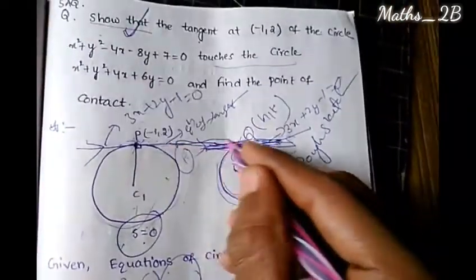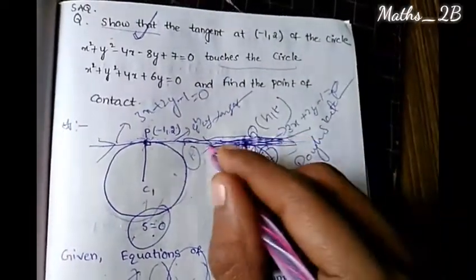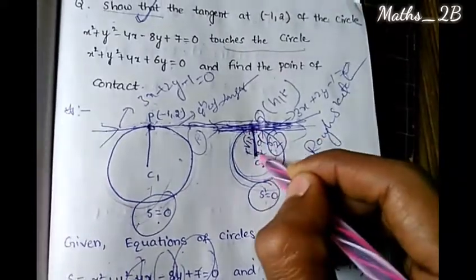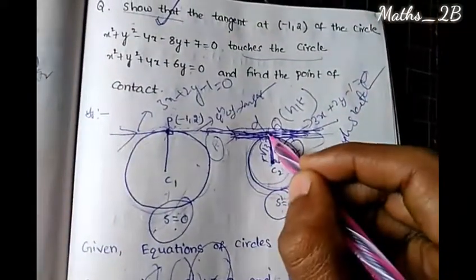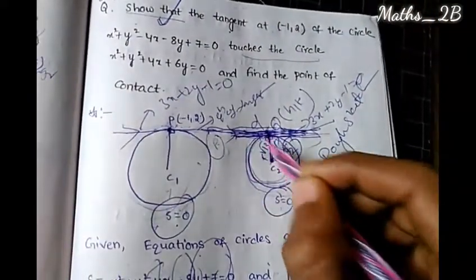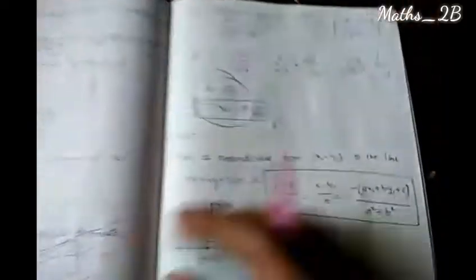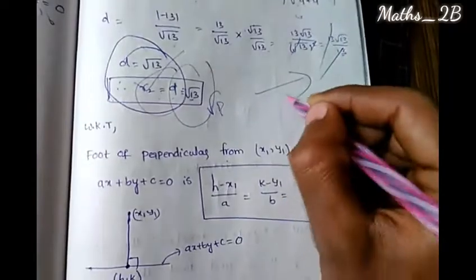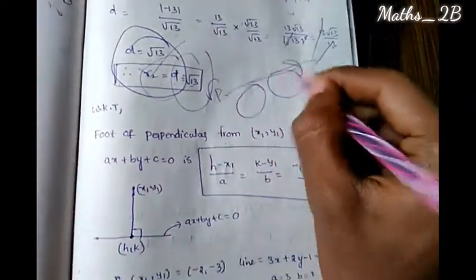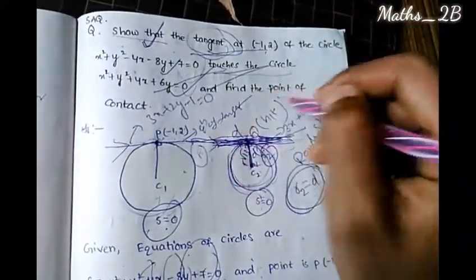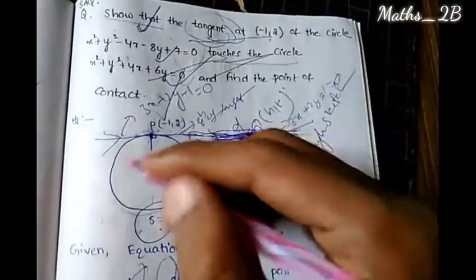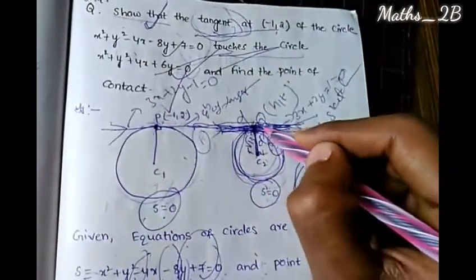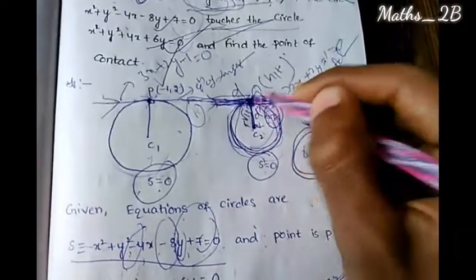So the tangent 3x plus 2y minus 1 equals 0 touches the second circle. The perpendicular distance from C2 equals the radius. Now we also need to find the point of contact. The point of contact is the foot of perpendicular from center C2 of the second circle to the tangent line.